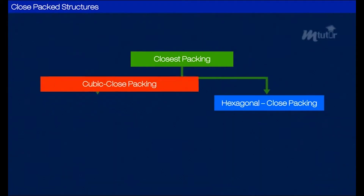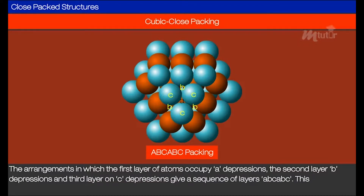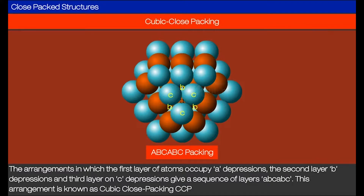Cubic close packing: the arrangement in which the first layer of atoms occupies A depressions, the second layer B depressions, and the third layer C depressions gives a sequence of layers A, B, C, A, B, C. This arrangement is known as cubic close packing, that is CCP.